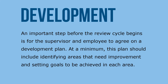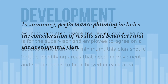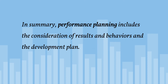An important step before the review cycle begins is for the supervisor and the employee to agree on a development plan. At a minimum, this plan should include identifying areas that need improvement and setting goals to be achieved in each area. Development plans usually include both results and behaviors. In summary, performance planning includes the consideration of results and behaviors and the development plan.